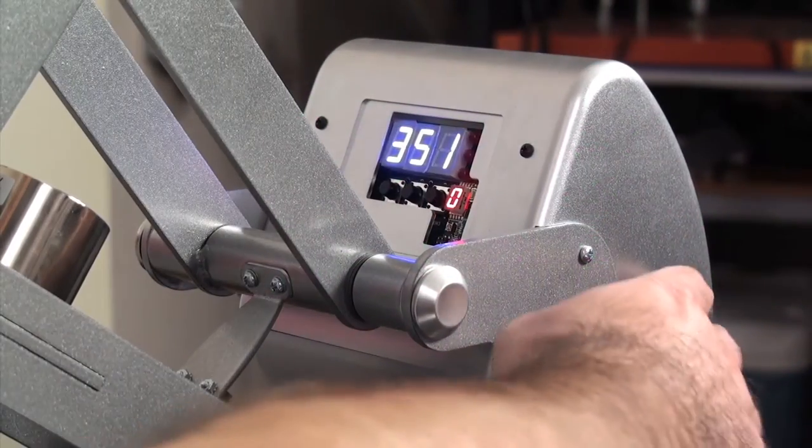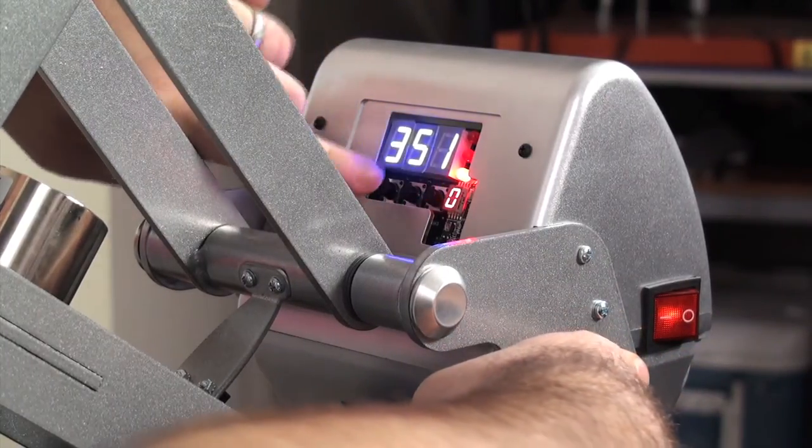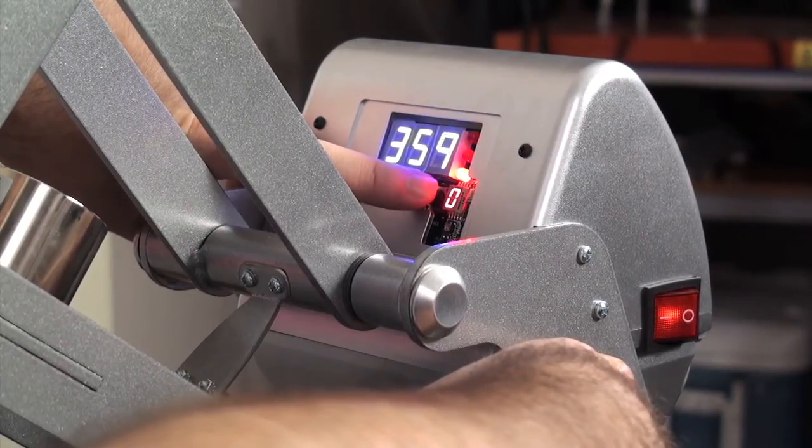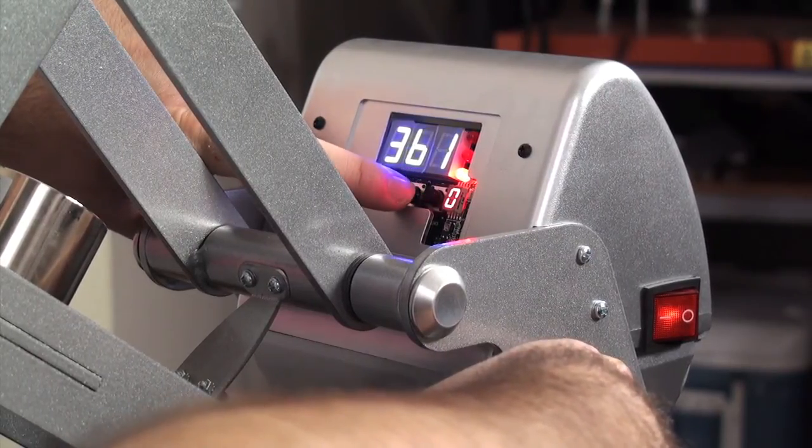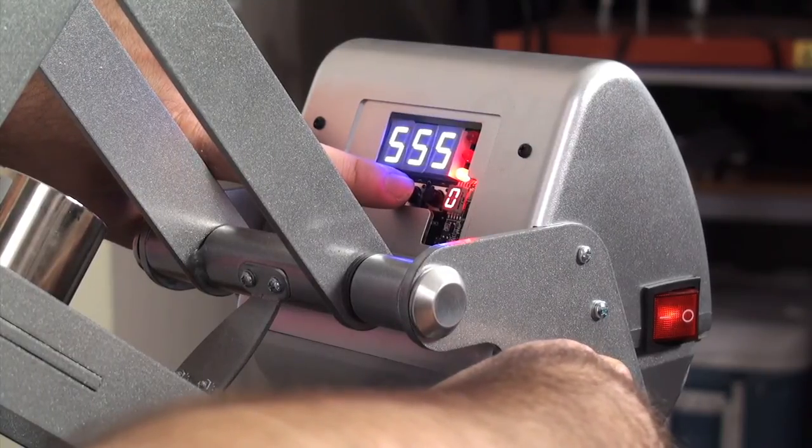If they don't match, turn off the press and with one hand hold in the two outer buttons on the control panel and turn the press back on. You can now raise or lower the control panel temperature to match the reading of the test strip. Press the center button on the control panel to complete the process.